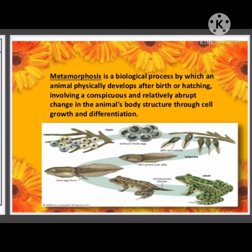Similarly, the young one of a frog is a tadpole — and both are entirely different in appearance. But after attaining a particular age or after completing a special duration, a number of changes happen to the body of these young ones and they become the adult. The adult looks the same as the parent.